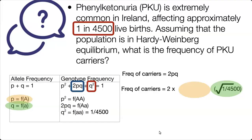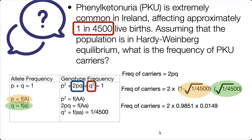Our allele frequency equation is P plus Q equals 1, which we can rearrange so that P equals 1 minus Q. That's shown in the orange circle. Multiply this out and calculate it, making sure you take your result to four decimal places or save your answer in your calculator. The answer to this question is 2.9%.